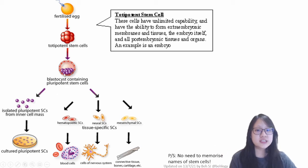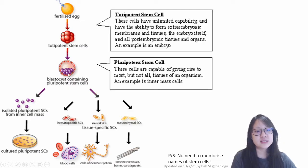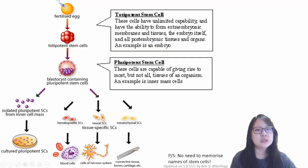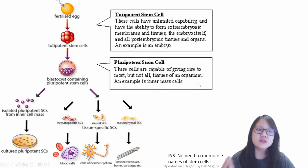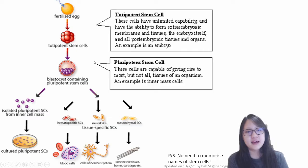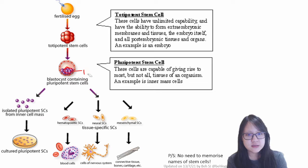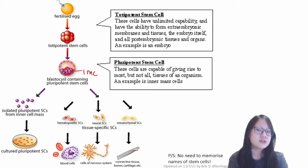Now, after the embryo stage, it forms a blastocyst, and inside here there are pluripotent stem cells. These cells at this stage are more differentiated than the totipotent stem cells — not very, but a little bit progressed already. These cells are capable of giving rise to most, but not all, tissues of the organism. An example of this is inner mass cells, which are these cells in the blastocyst.